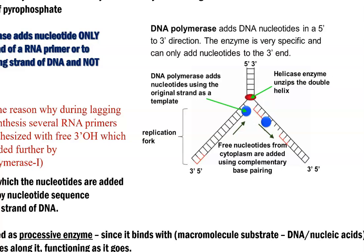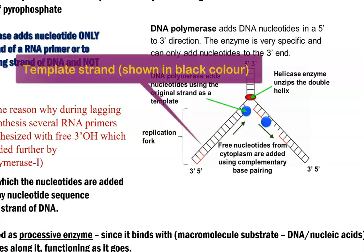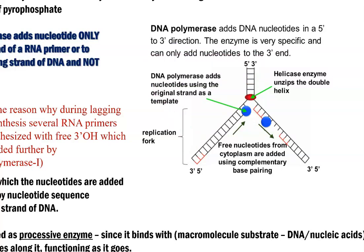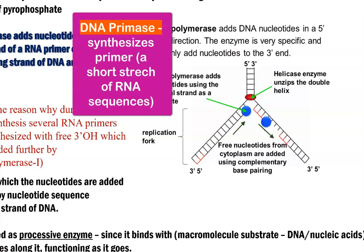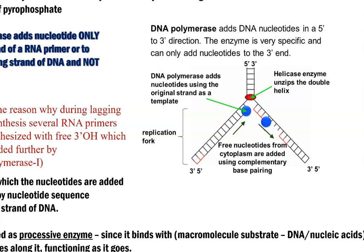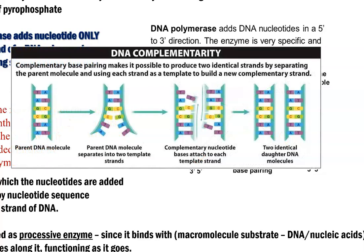DNA polymerase adds nucleotides in a 5'-to-3' direction. That is, the newly growing strand is extended in the 5'-to-3' direction using the 3'-to-5' template strand. The enzyme is very specific and can only add nucleotides to the 3'-OH end. The nucleotides are freely present in the cytoplasm and are added to the growing chain.